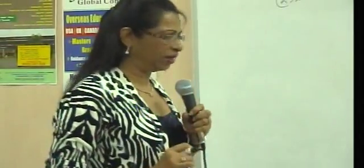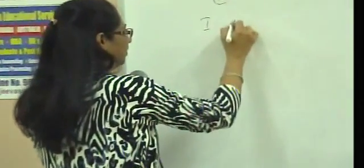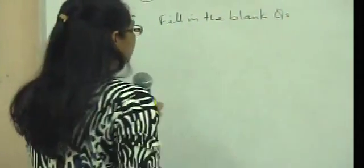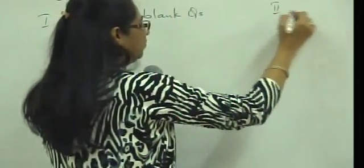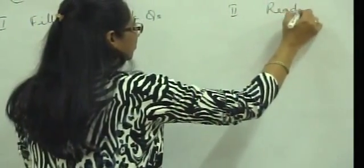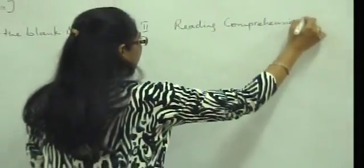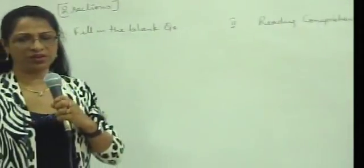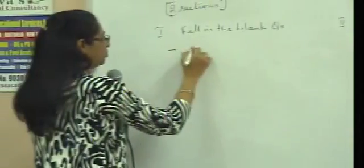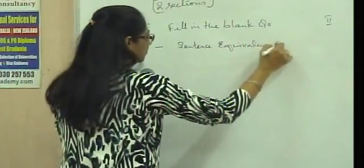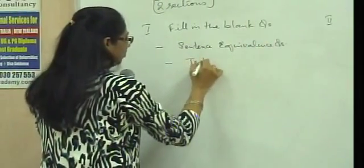The overall 40 questions on the two sections of GRE are divided into two major types of questions. The first type falls under the fill-in-the-blank questions. The second falls under the reading comprehension questions. The fill-in-the-blank questions, we have two types on the GRE. The sentence equivalence questions and the text completion questions.